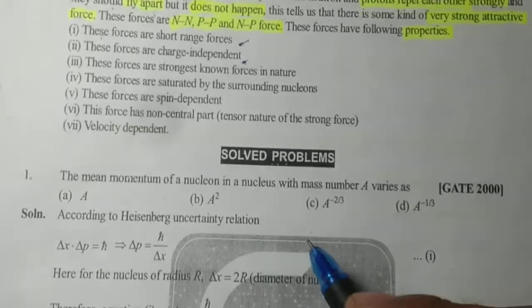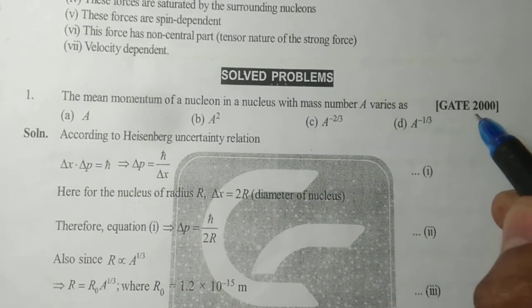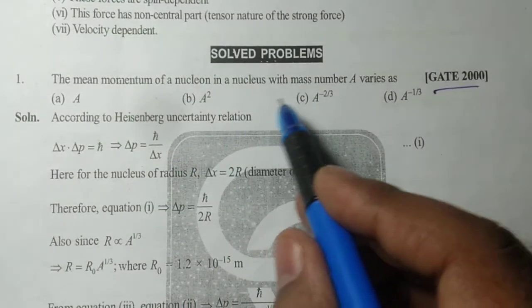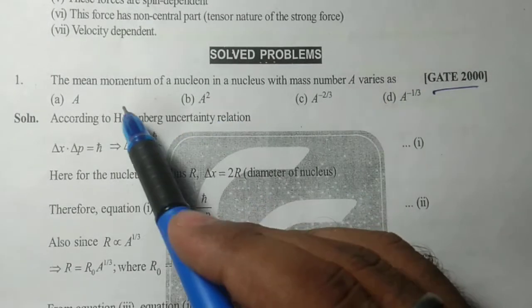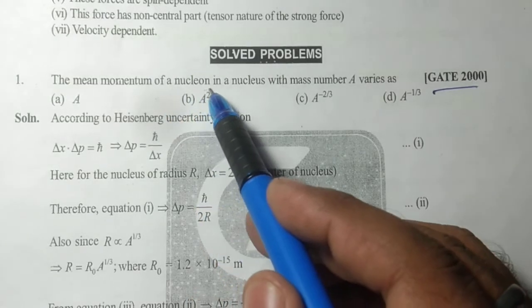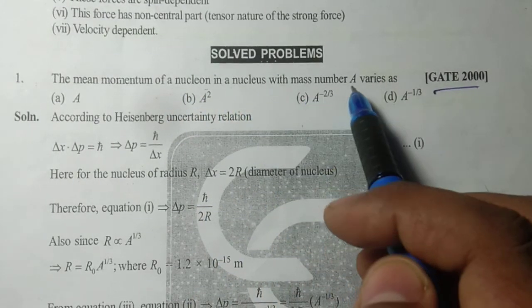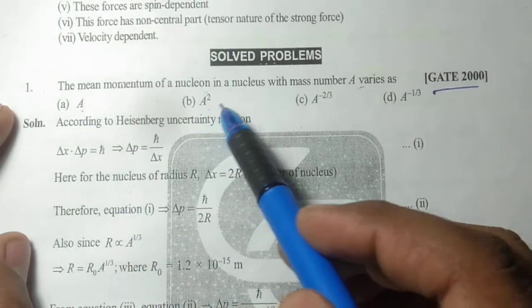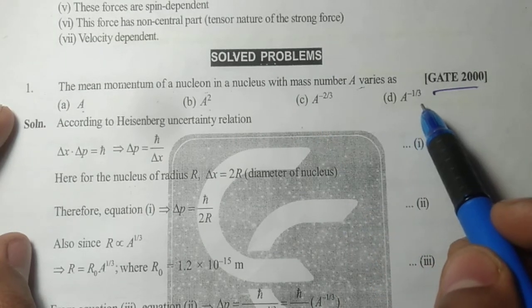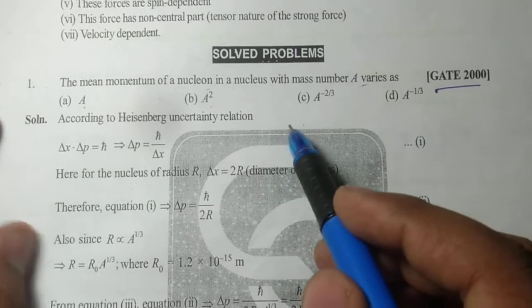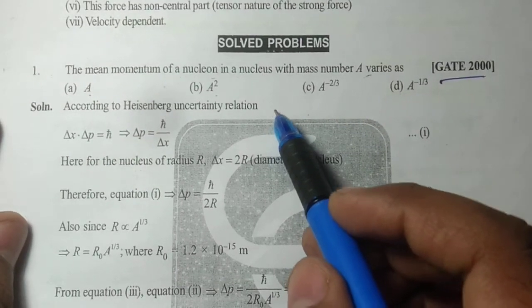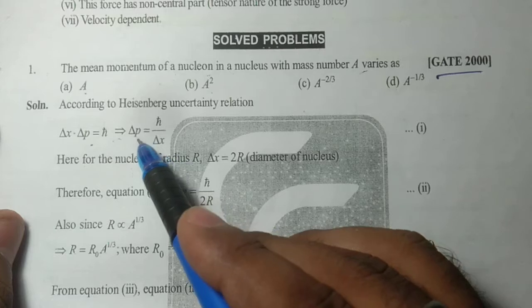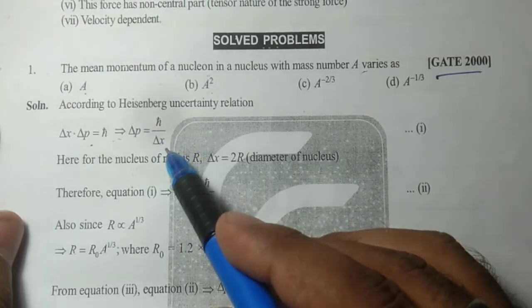Now we discuss some problems which were asked in GATE 2000. The question is: the mean momentum of a nucleon in a nucleus with mass number A varies as. According to Heisenberg uncertainty principle, delta x times delta p equals h bar. We can write delta p equals h bar upon delta x.